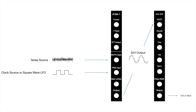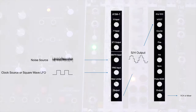Subsequently, what's going to happen is you'll hear contiguous random pitches. We're going to take the sample and hold output and feed it into the 1V per octave input of the 2HP VCO, hence the pitch differential. Alright, let's check it out.